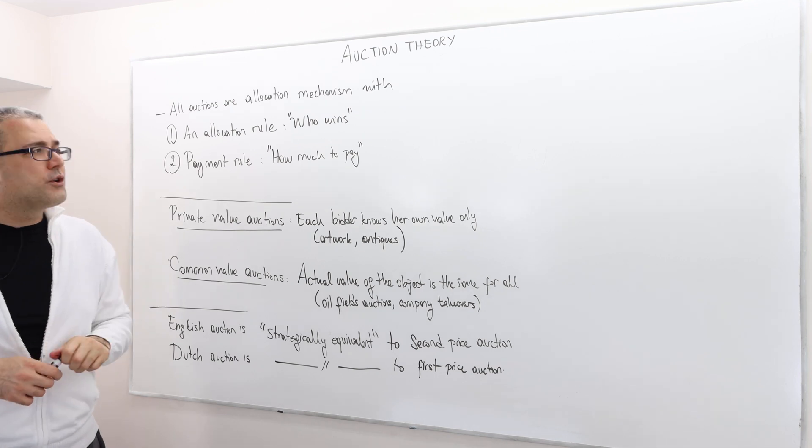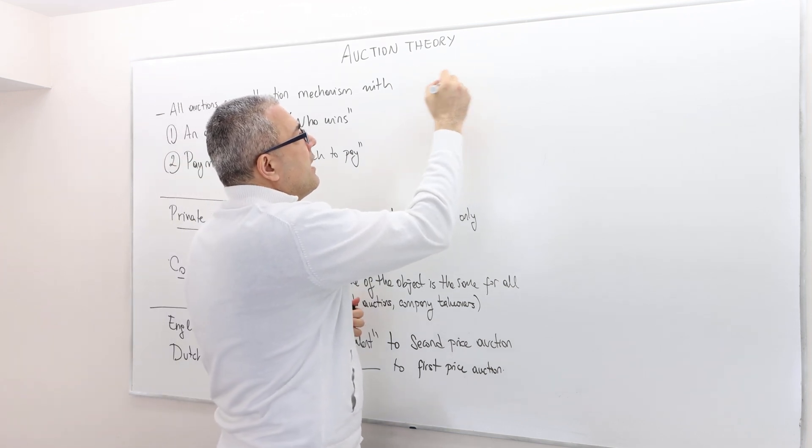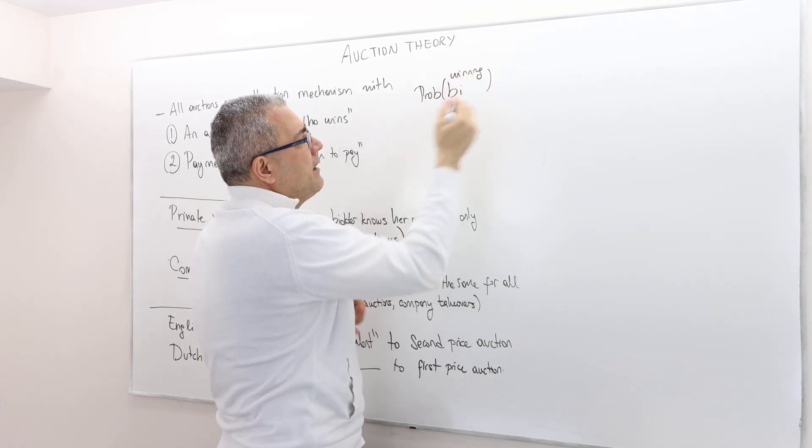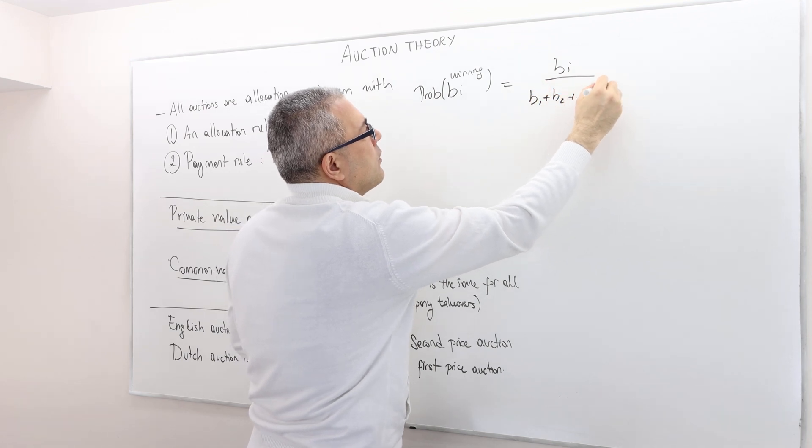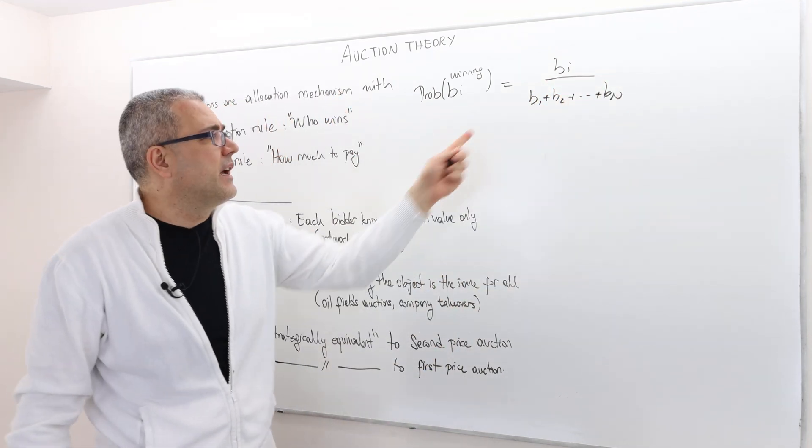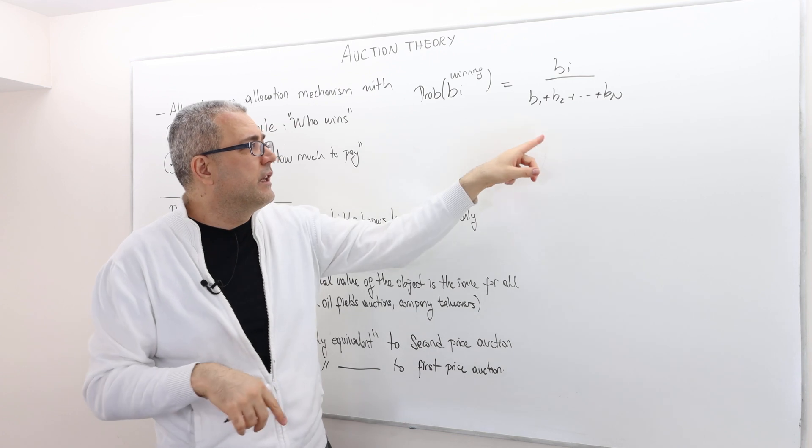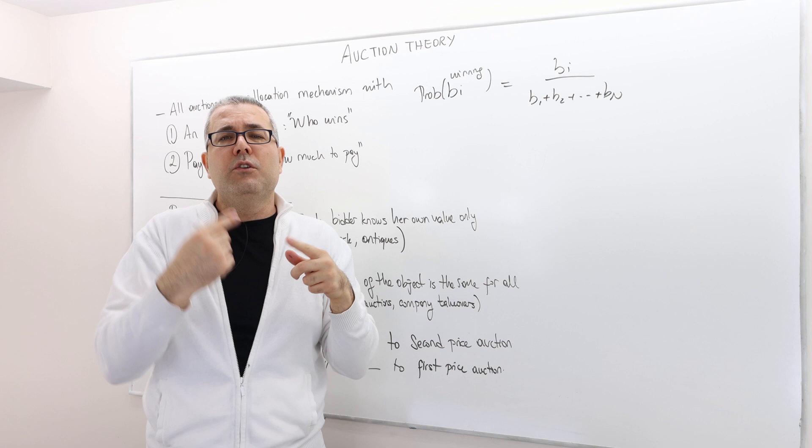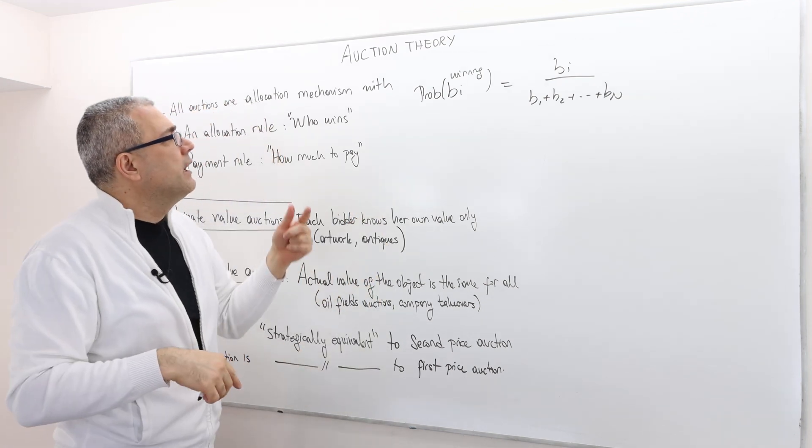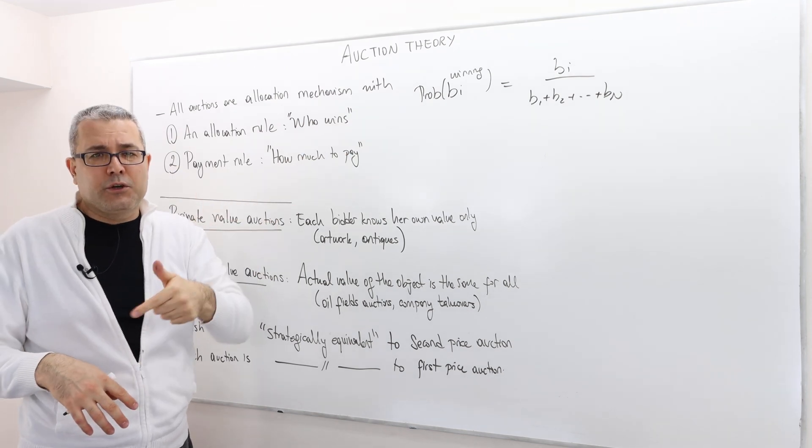For example, in Chinese auction, each bidder has a probability of winning. So if you make a bid B-I, your probability of winning, given that you made the bid B-I, is equal to B-I divided by B-1 plus B-2 all the way up to B-N, assuming that there are N bidders and these are the summation of the bids of everybody else, including you. So it's sort of the relative ratio of your bid determines your likelihood of winning the object. So there are some auctions where the winners are determined stochastically, not deterministically.